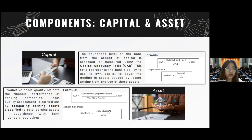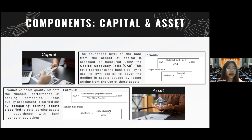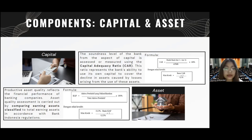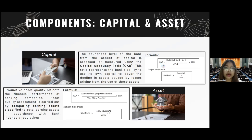The second component is Asset. Productive asset quality reflects the financial performance of banking companies. Asset quality assessment is carried out by comparing earning assets classified to the total earning assets, in accordance with Bank Indonesia regulations. The formula is: KAP = Aktiva Produktif yang Diklasifikasikan / Total Aktiva Produktif × 100%. The credit value formula is: 15.5% minus ratio KAP, plus one, divided by 0.15%.